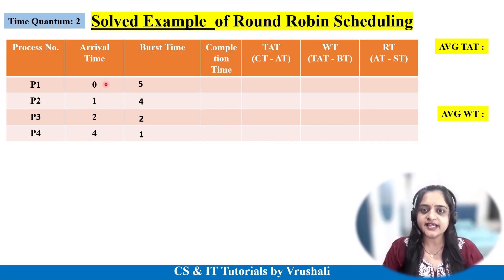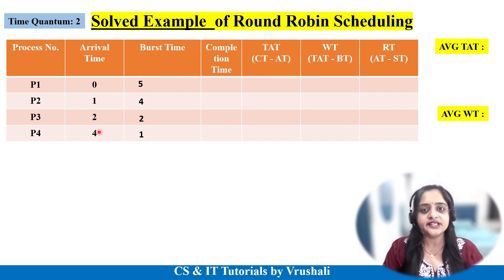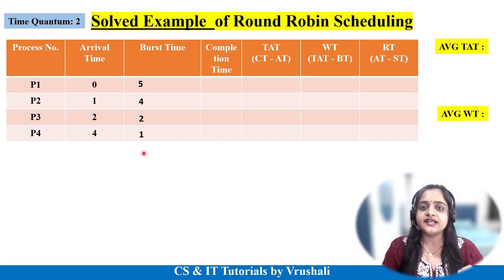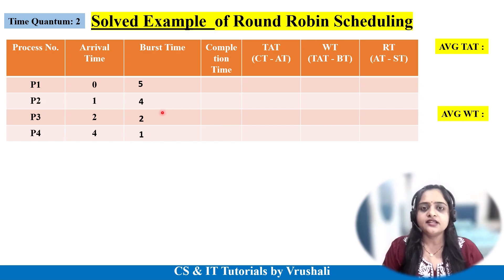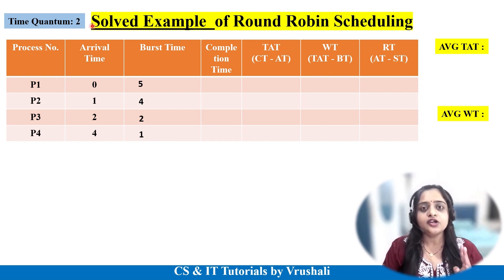Arrival times are: P1 arrives at 0, P2 arrives at 1, P3 arrives at 2, and P4 arrives at 4. Burst time — the total execution time required — is: P1 requires 5 units, P2 requires 4 units, P3 requires 2 units, and P4 requires 1 unit. Since this is a round robin scheduling algorithm, time quantum is given as 2, meaning every process executes 2 units of time at a time.